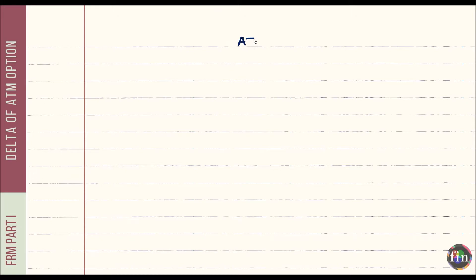In this short video we will explore the delta of an at-the-money option — both for an at-the-money call and an at-the-money put. We'll assume both options are European options on a non-dividend paying stock.